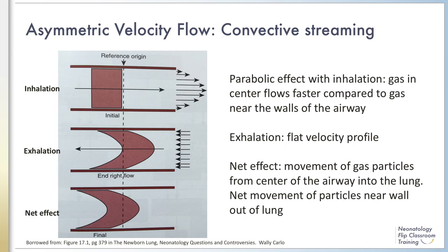Asymmetric gas flow is otherwise known as convective streaming and is the result of gas waves distorting as they move down the airway. During inspiration, the gas at the center of the airway moves faster and has less friction compared to the gas moving near the airway's outer walls. During exhalation, exiting gas is a flat wave. When the vectors for inhalation and exhalation are combined, a net effect of gas flow is created with gas at the center of the airway moving into the lung and gas at the edge moving out of the lung.